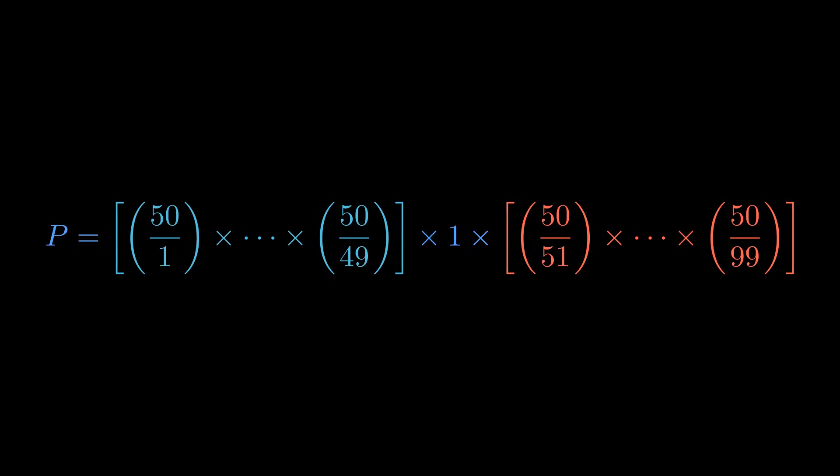Now look at what's left on either side. Every single term in the left group is greater than 1 because the numerator is bigger than the denominator. Every term in the right group is less than 1. But here's the magic: what happens when we pair them up symmetrically?